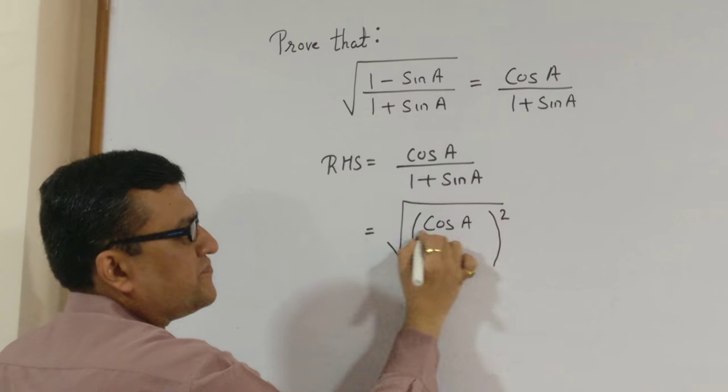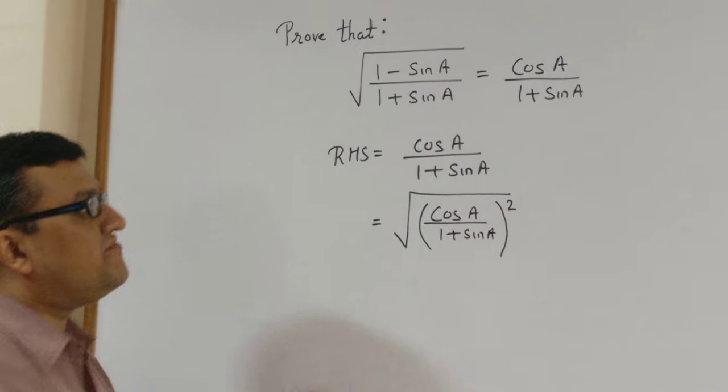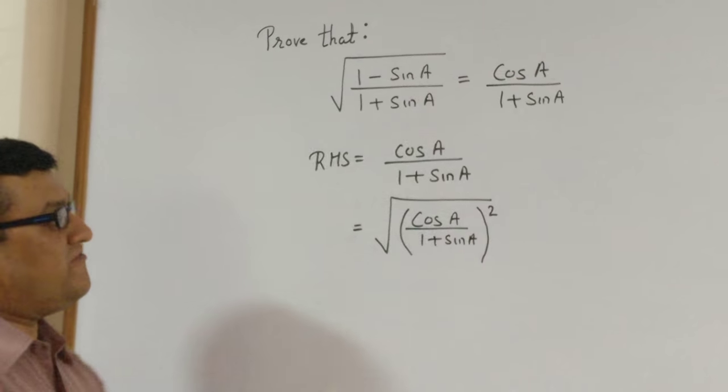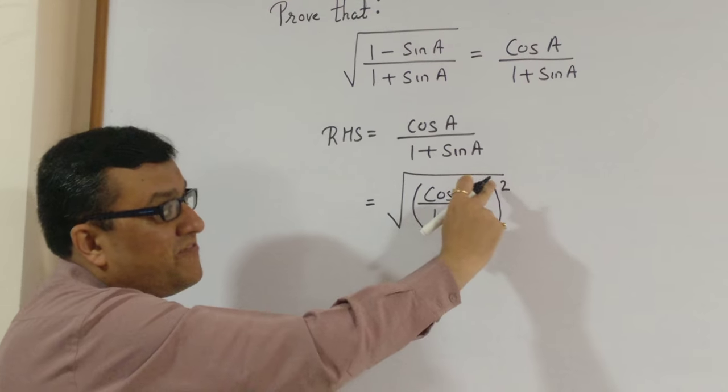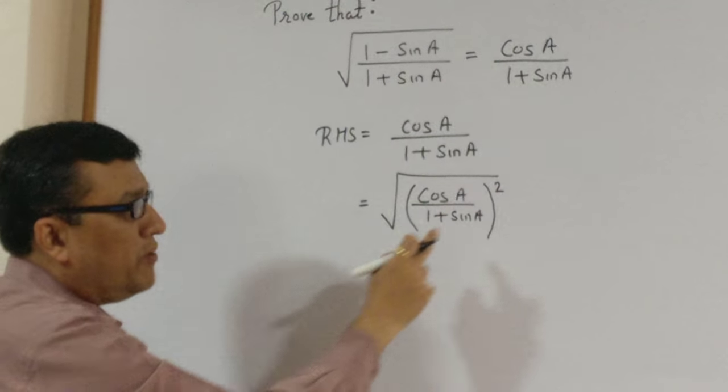What we have done is we have taken RHS. When we see RHS to LHS, our LHS has a root sign whereby our RHS didn't have, so we have taken a root sign. In order to compensate we have taken a square as well.